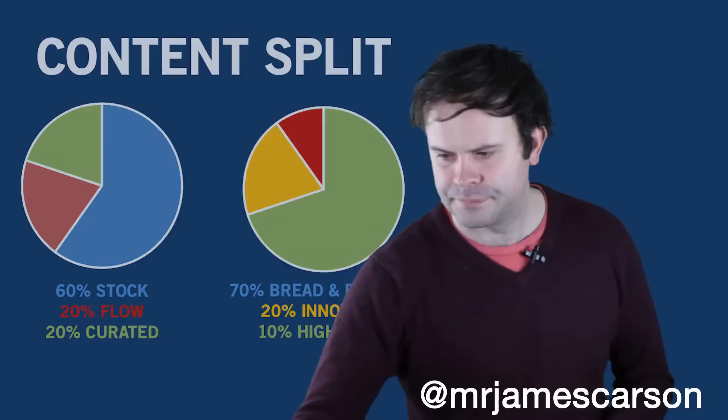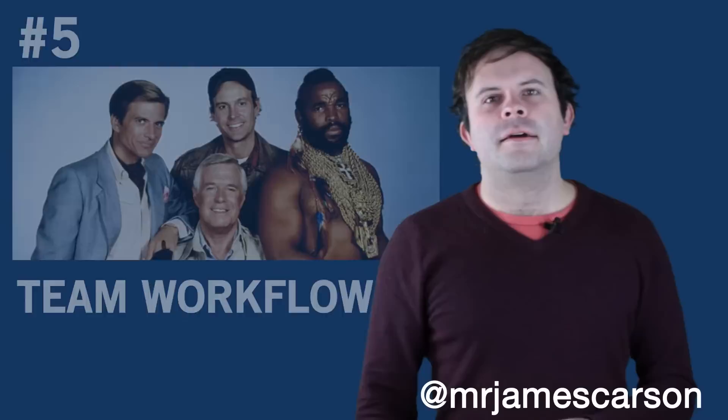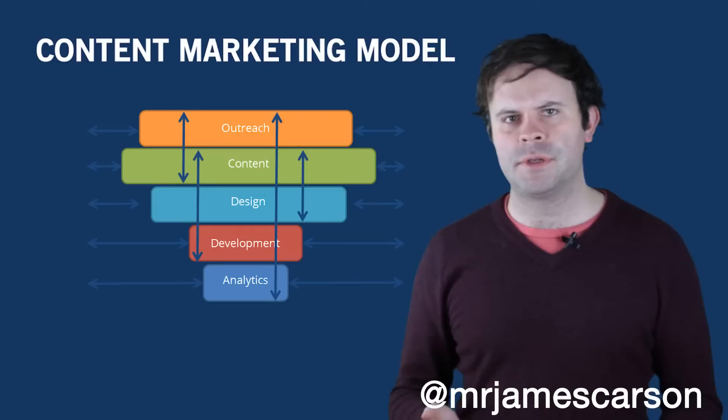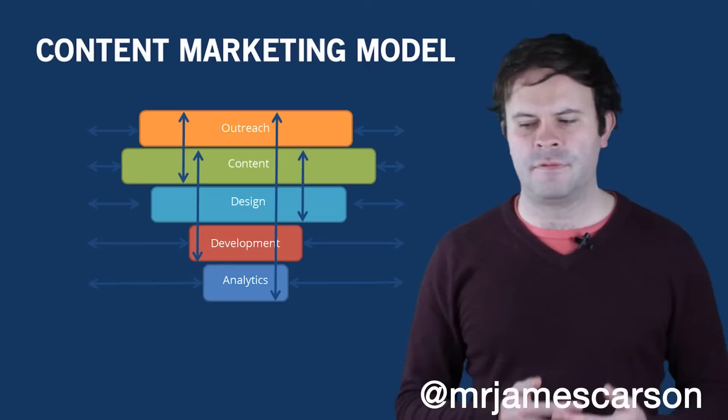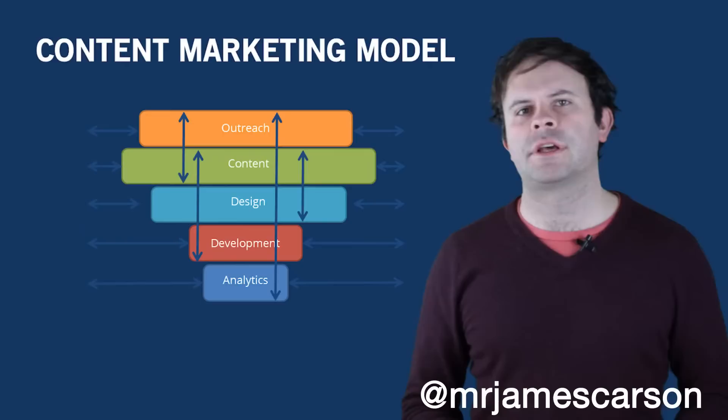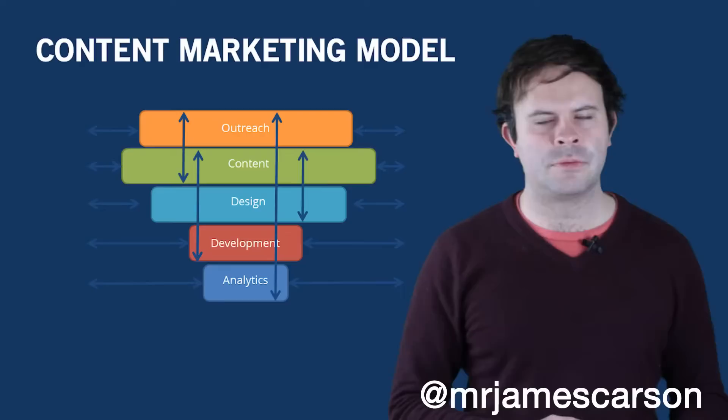Number five is team workflow. This is the content marketing model — a layer cake of different departments on which content marketing is reliant. At the bottom we have analytics, then development, design, content, and outreach. With content marketing, it's important not to just think about content in isolation, but to think of it as interlinked with other departments within digital marketing or an organisation.